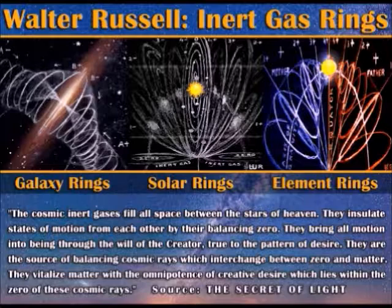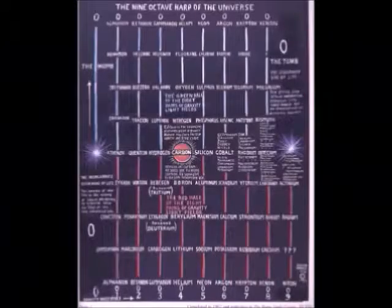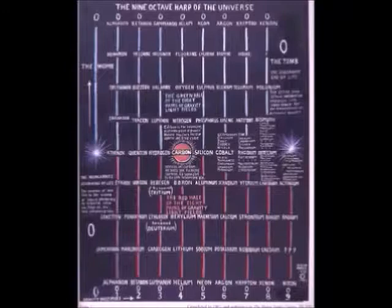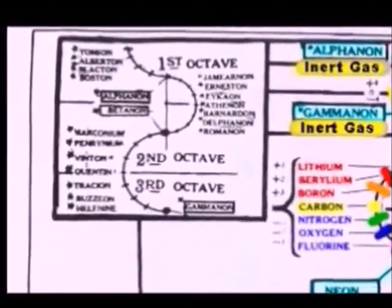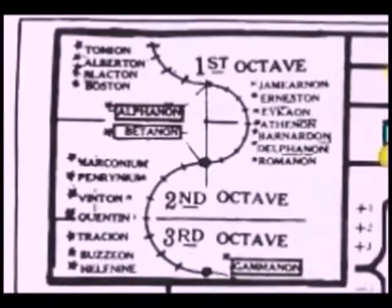In the inert gases are the souls of their bodily manifestations in the universe of motion — in them is desire for expression and the pattern form of that desire. The cosmic inert gases fill all space between the stars of heaven. They insulate the states of motion from each other by their balancing zero. They bring all motion into being through the will of the creator, true to the pattern of desire. There are nine cosmic gases — the first and the last being one. Alphanon begins the cycle and ends it — there is no beginning and no ending. The list of cosmic gases follows: Alphanon, Betanon, Gammanon, Helium, Neon, Argon, Krypton, Xenon, and Niton. The known octaves within the range of perception are five and a half, beginning with the third or hydrogen octave and ending with the uranium group in the last octave.